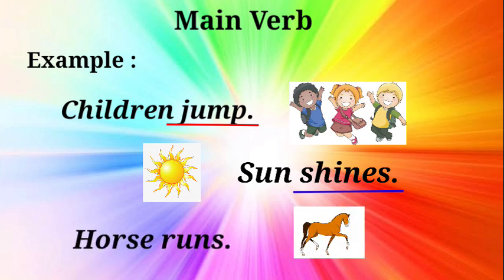In this sentence, the horse shows the action of running. Therefore, runs is a main verb. In this way, we can say that the main verbs show the action of the subject and are independent in giving meaning to the sentences.